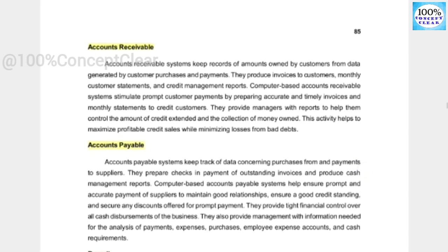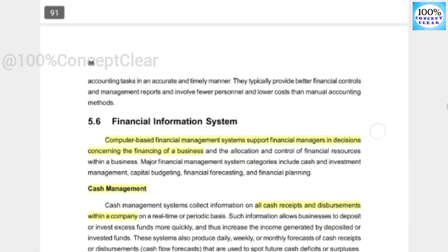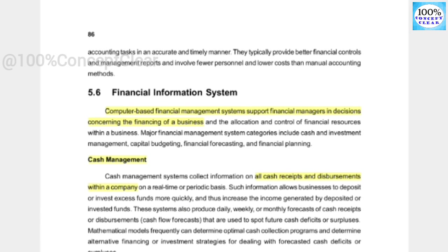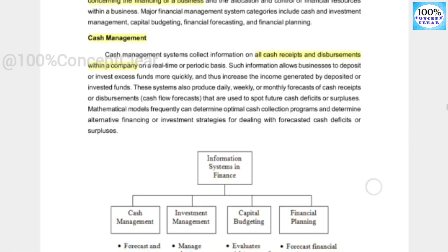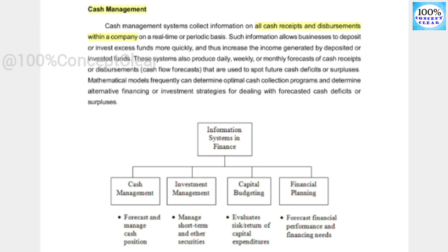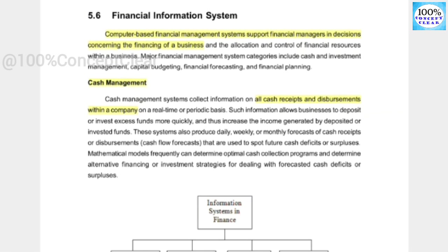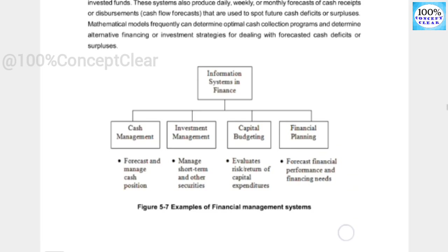Next is the financial information system. The computer-based financial management system supports financial managers in decisions concerning the financing of a business. The first component is cash management — forecasting and managing cash position by tracking all cash receipts and disbursements within a company. A company monitors how much it receives and how much it spends; all of that is managed through cash management.